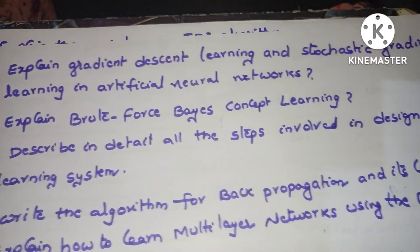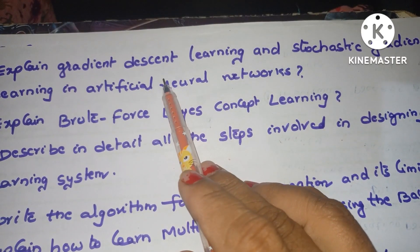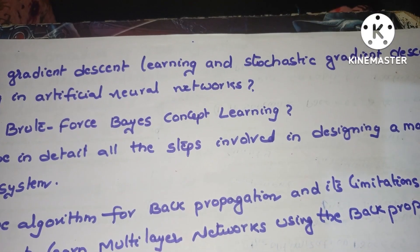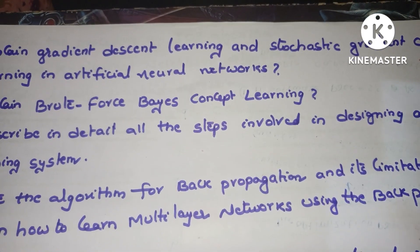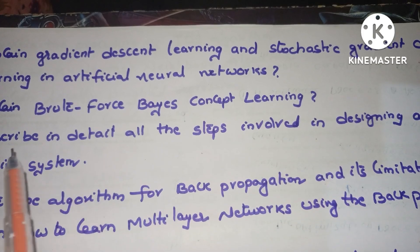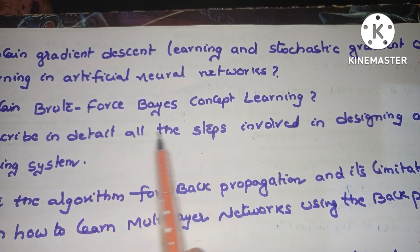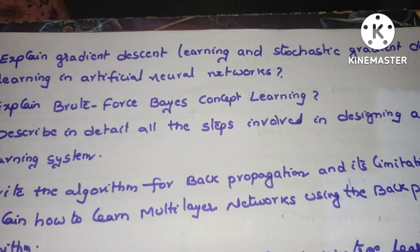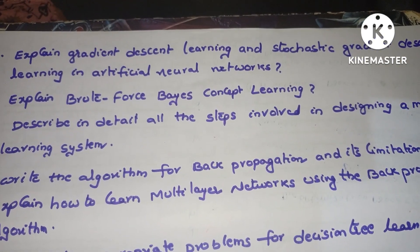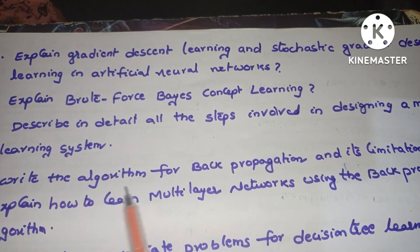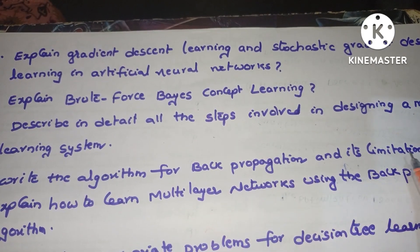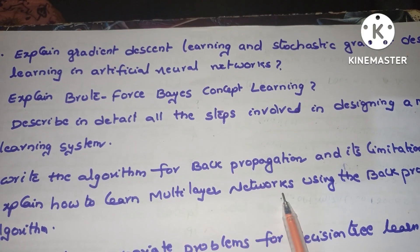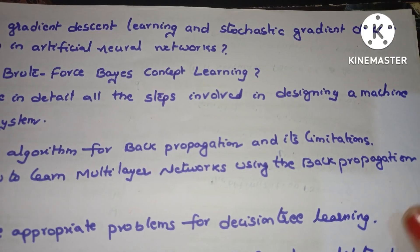Next questions are: explain gradient descent learning and stochastic gradient descent learning in artificial neural networks. Next one is: explain brute force bias concept learning. Next, describe in detail all the steps involved in designing a machine learning system. Next one is: write the algorithm for backpropagation and its limitations, and explain how to learn multi-layer networks using the backpropagation algorithm.